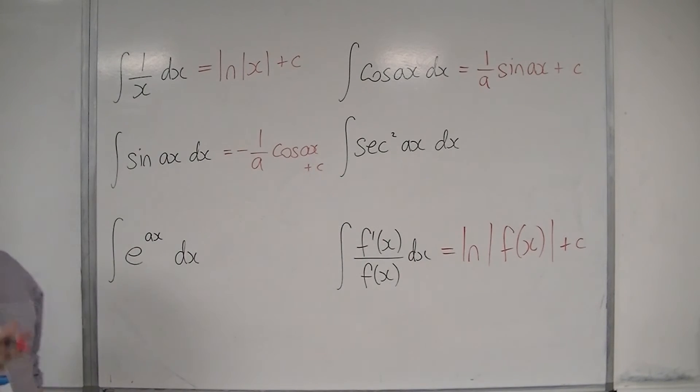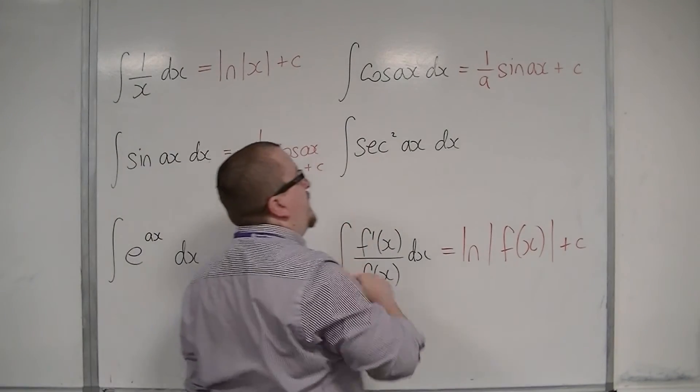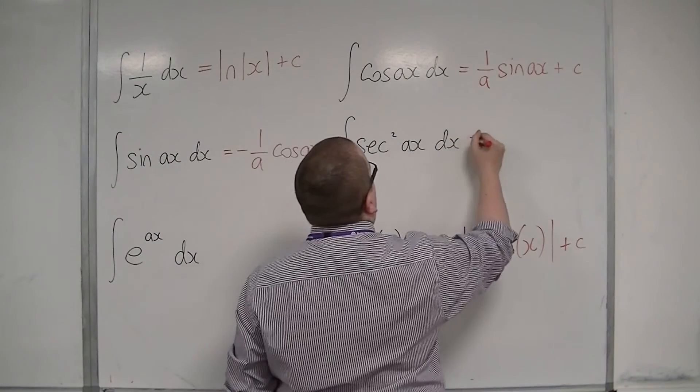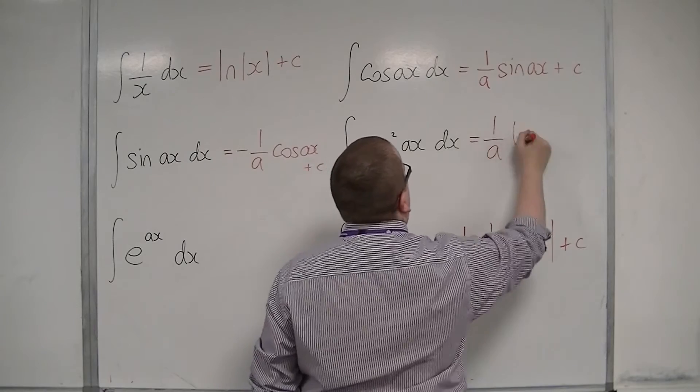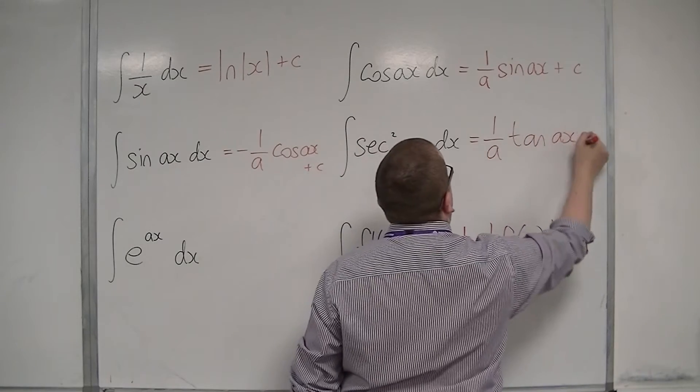Now, sec squared, we know that tan x differentiates to sec squared, so sec squared must integrate to tan, and so this must be 1/a tan(ax) + c.